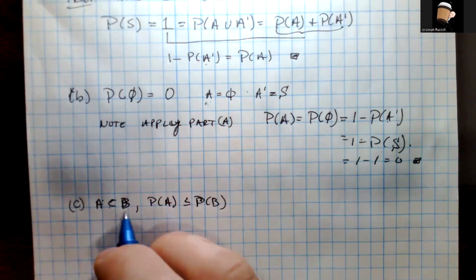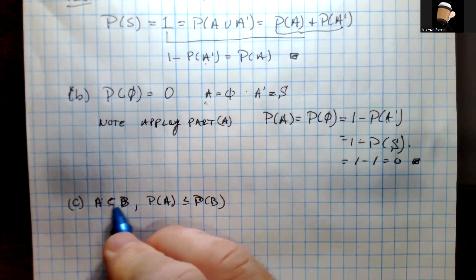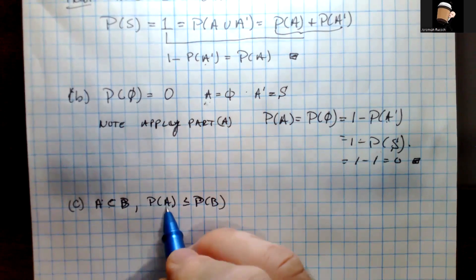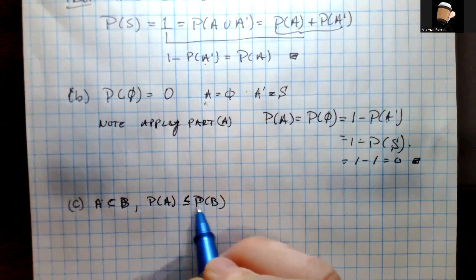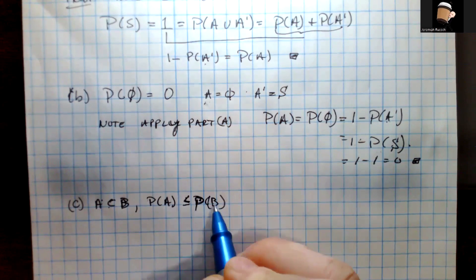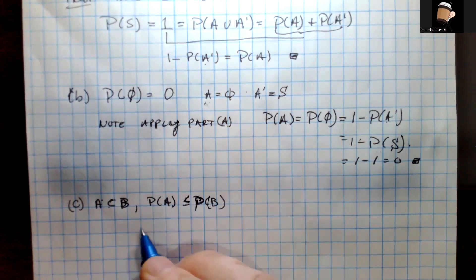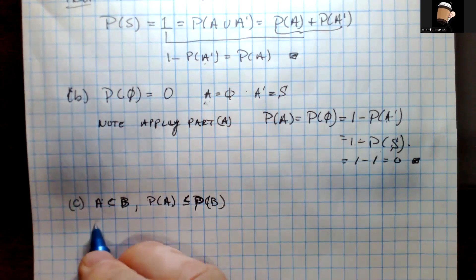We want to show that if A is a subset of B, then the probability of A is less than or equal to the probability of B. To prove this one, it's going to require a little bit of ingenuity — this is going to be fun.